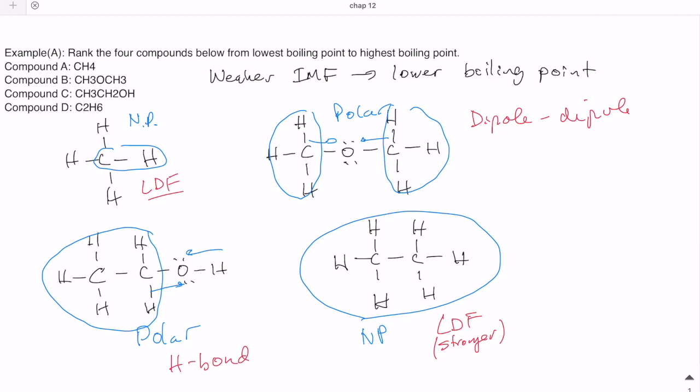The lowest boiling point would be compound A, because that one has the weakest IMF. And then that's going to be less than the other LDF molecule, which is C2H6. Then after that, followed by the dipole-dipole molecule, CH3OCH3. And then lastly, we have the hydrogen bond molecule, which is the strongest intermolecular force therefore the highest boiling point.